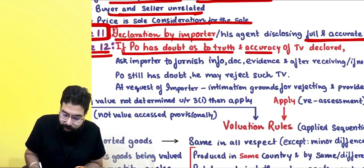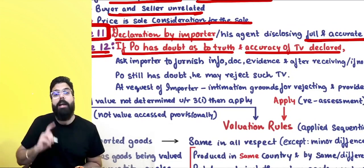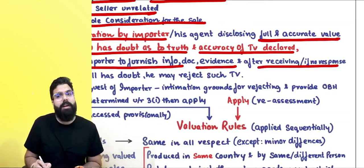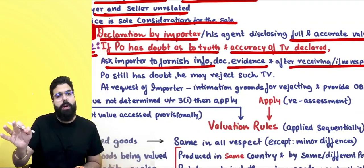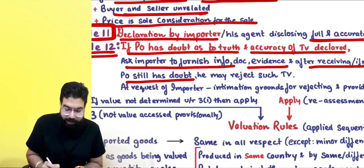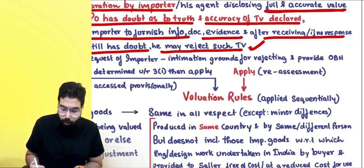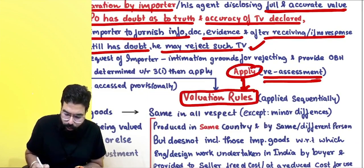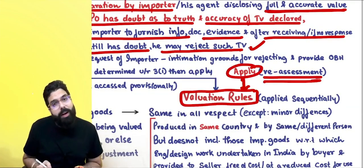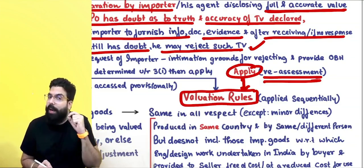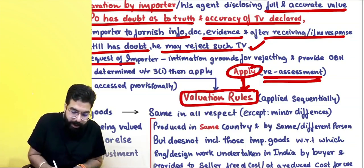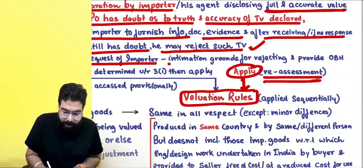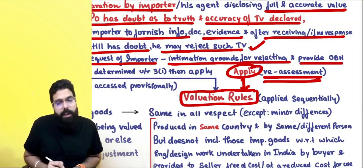Rule 12 says if the proper officer has any doubt about the truth and accuracy of the declared value, he will ask for additional documents and evidence. If you don't respond or he still has doubt, he will reject the transaction value and do reassessment by applying the valuation rules. If the importer requests, the officer must give intimation of the grounds for rejection and provide an opportunity of being heard.